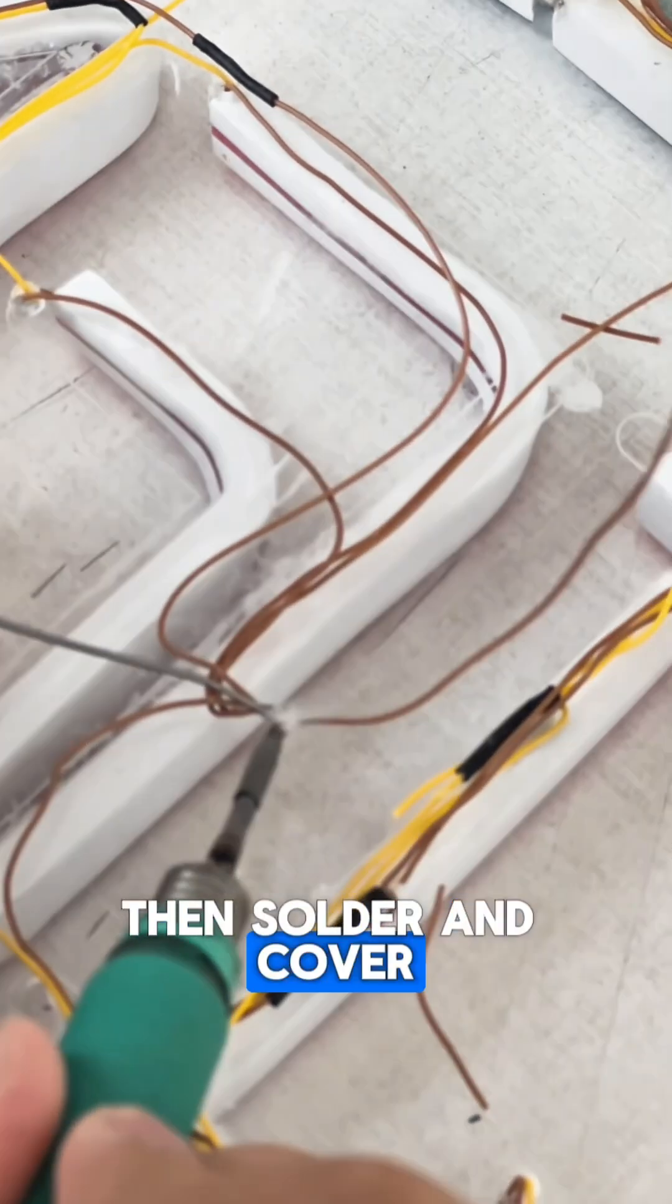We connect the wires, making sure the polarity is correct. Then solder and cover them with heat shrink.